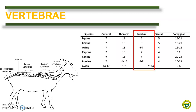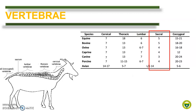For the lumbar vertebrae, the number ranges from 6 to 7. Larger animals have 6 while smaller animals have 7. In the case of birds, the lumbar vertebrae is fused with the sacral vertebrae forming the synsacrum. Same with all animals, the sacral vertebrae are fused into a single sacrum. Originally, it ranges from 3 to 5 sacral vertebrae. The caudal vertebrae varies in number depending on the species and breed, as reflected in the formula.